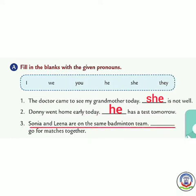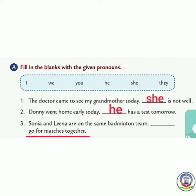Number 3: 'Sonia and Lena are on the same badminton team. Dash go for matches together.' Sonia and Lena are names of two girls, so which pronoun? They — T-H-E-Y. Answer: 'They go for matches together.'